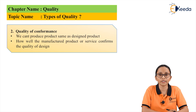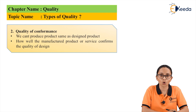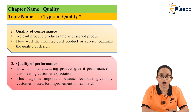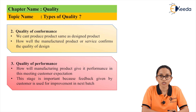After the product is manufactured or while the service is delivered, the last type of quality is quality of performance. Quality of performance is the last stage in quality, after the quality of conformance — that means after manufacturing the product as close as possible to the design, how well the manufactured product gives its performance.